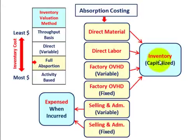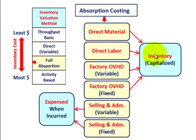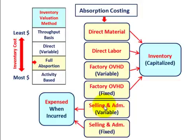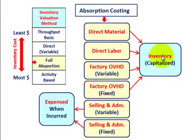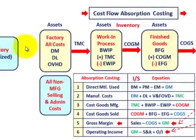For absorption costing, we look at what we include and capitalize in our inventory versus what we expense. Our direct materials, direct labor, and factory overhead — both the variable portion and the fixed portion — are all going to be included in our inventory cost and capitalized. The only thing that's going to be expensed is all selling and administrative costs, both variable and fixed. That includes all support functions like research, development, engineering, and so forth — those are expensed when they occur.